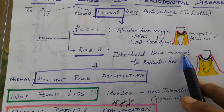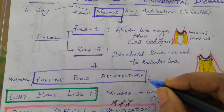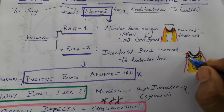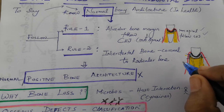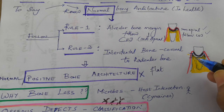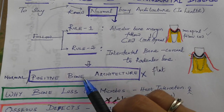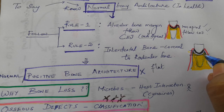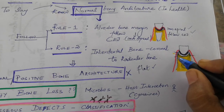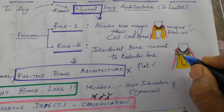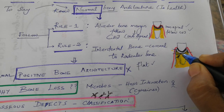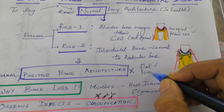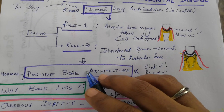If these rules are not satisfied, we call it reverse architecture. For example, if the interdental bone goes down to the level of the radicular bone, it becomes flat architecture — no scalloping. If the interdental bone goes even further below the radicular bone, that is reverse architecture. These are all pathological conditions.